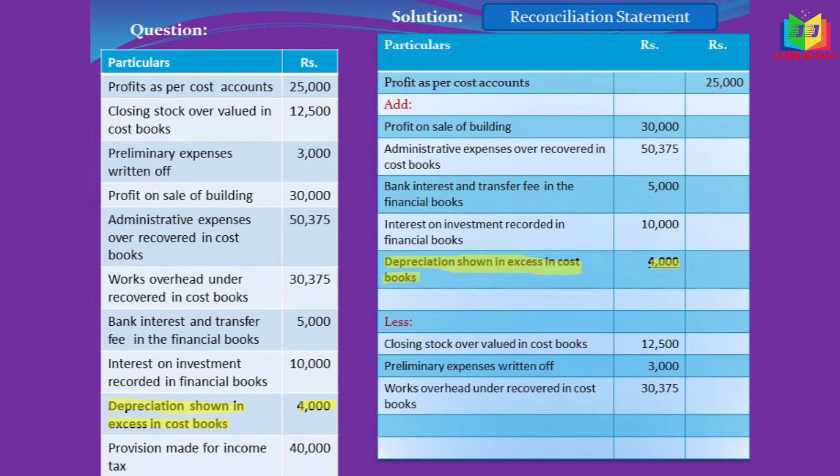The next item is depreciation shown in excess in cost book. It is clearly stated: excess in cost book. Expenses shown in excess will reduce the profit, so in order to rectify that, we have to add this depreciation.